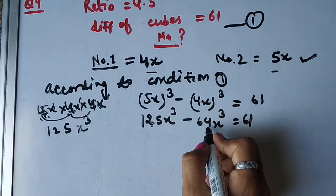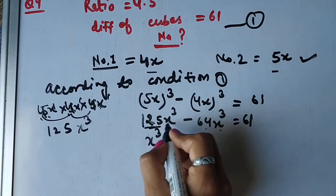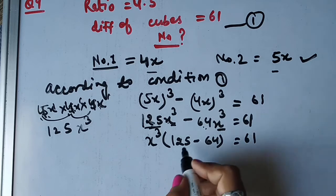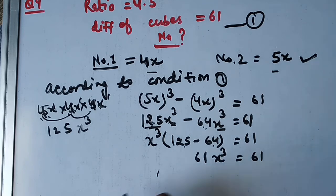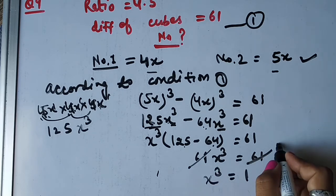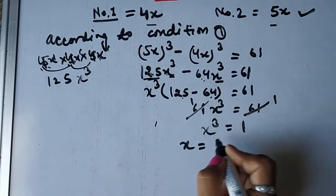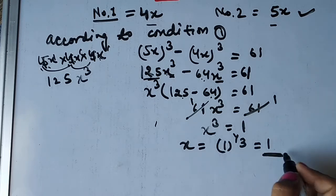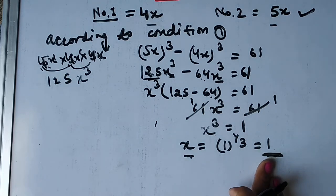125x³ aur 64x³ — dono mein x³ dikh raha hai. x³ bahar nikaalo. Yahan se kya bacha: 125 minus 64 = 61. Aur x³ ×61 = 61. Dono taraf 61 hai, kat jayenge. Toh x³ = 1. Ab x ki value nikalni hai — power 3 hai toh doosri side jaake power 1/3 ho jayegi. 1 ki power 1/3 = 1. Toh x = 1.